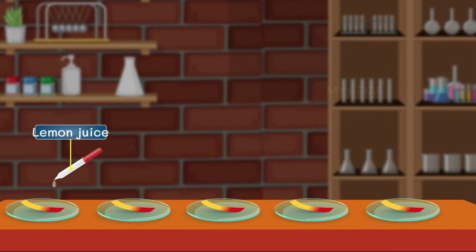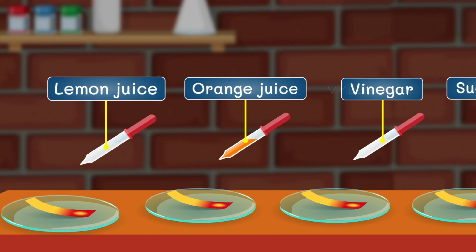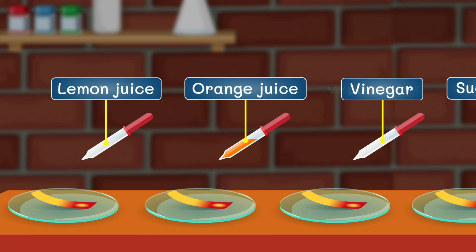When we drop the solution of lemon juice, orange juice, vinegar, sugar and salt into the red color turmeric paper, we can see that the lemon juice, orange juice and vinegar turn the red color on the turmeric paper to yellow.